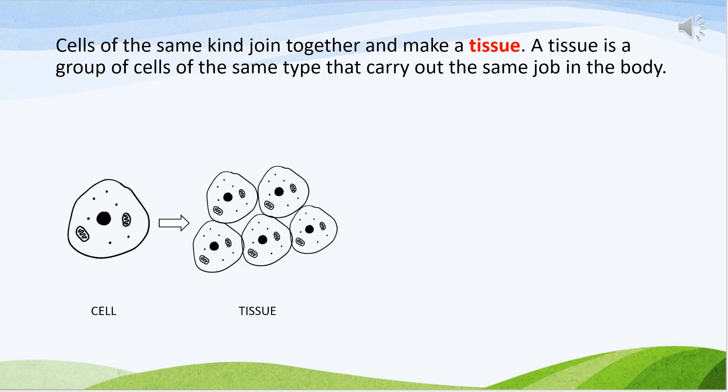When cells of the same kind join together, they form tissues. A tissue is a group of cells of the same type that carry out the same job in the body. As you can see in the drawing, cells of the same kind have joined together and have formed a tissue.